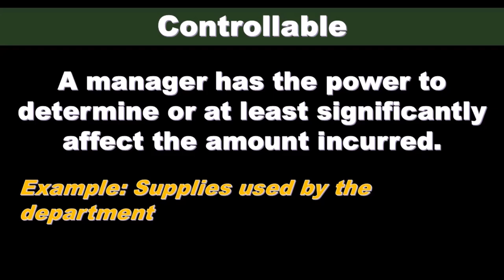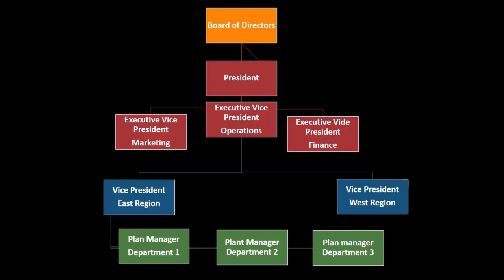Those things that they have some power to do something about. An organizational chart is going to be a very useful and necessary tool for responsibility accounting, because our objective here is to take the organization, break it up into separate units and segments, and then assign responsibility to that. In order for this to work well, we need to know exactly what those units are so that we can assign specific responsibilities. What we don't want to have happen is for important responsibilities to go unassigned.